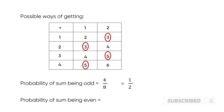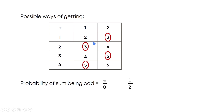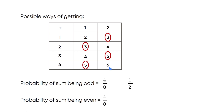The remaining outcomes give even sums: 4, 4, 6, and one more — four even outcomes. The total outcomes are 8. So the probability of the sum being even is also 4 by 8, which simplifies to one by two. Therefore, the probability of an odd sum is 1/2 and the probability of an even sum is 1/2.